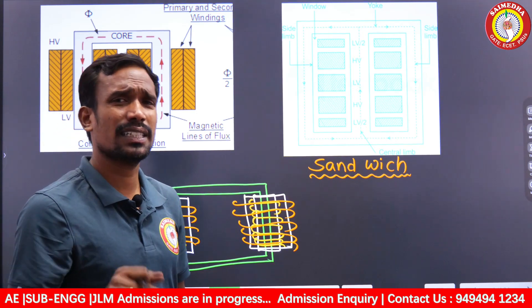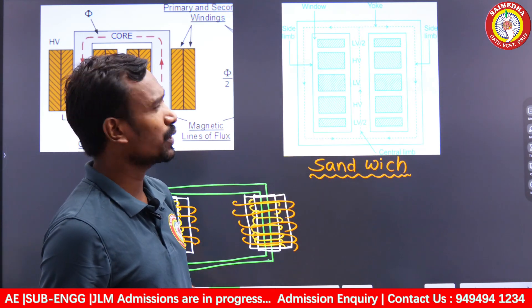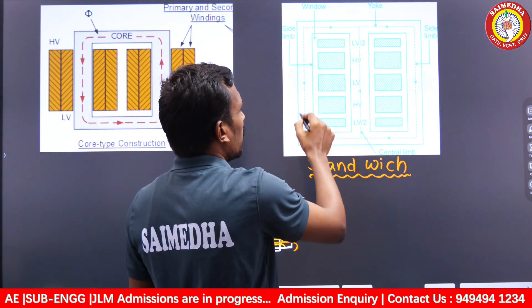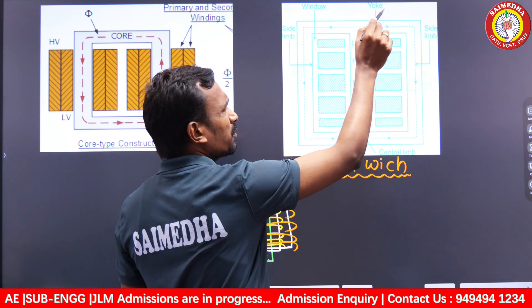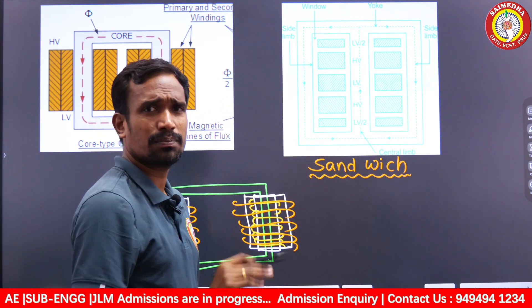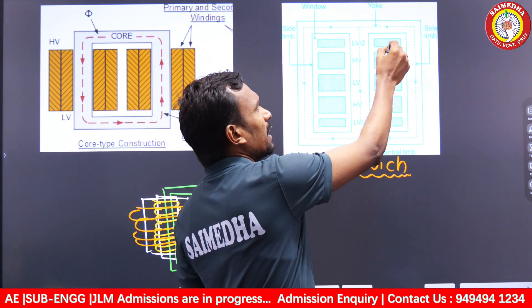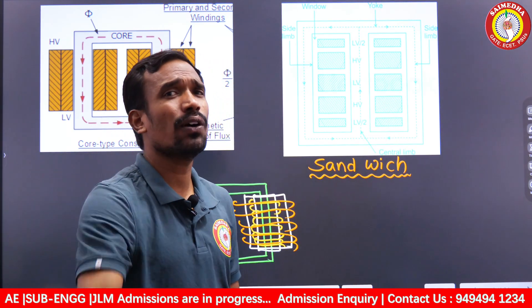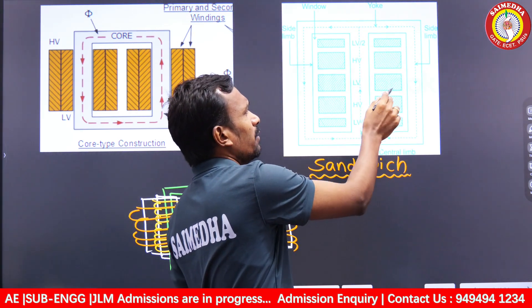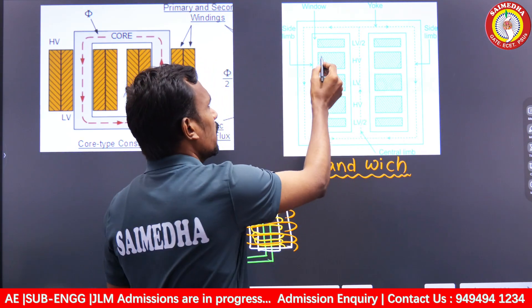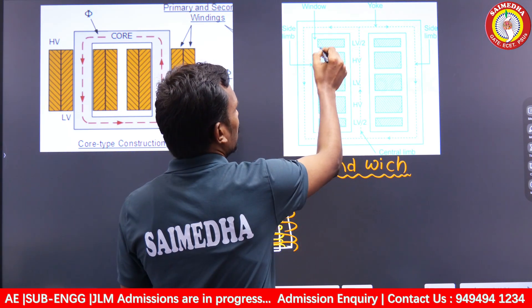For sandwich winding, the middle limb and two side limbs carry the windings. It is always preferred to place LV winding at the ends because LV windings give less leakage flux; HV at the ends gives more leakage flux. The arrangement is LV, HV, LV, HV winding layer by layer, with insulation placed between every layer.